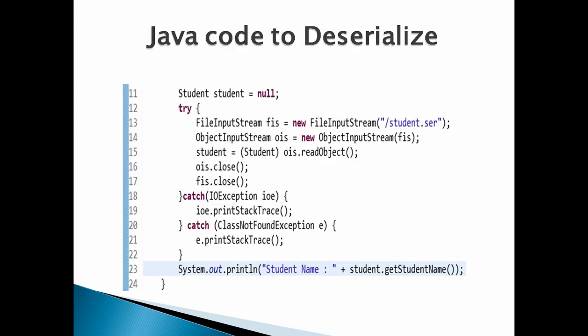In the test class main method, create a FileInputStream instance passing in the location and name of the file where we have already serialized the Java object — in our case, we serialized into the file /student.ser. Create an ObjectInputStream by passing in the FileInputStream instance created above. In order to deserialize the Java object, we will use ObjectInputStream's readObject method. This method will deserialize the serialized student object back into a Student object.